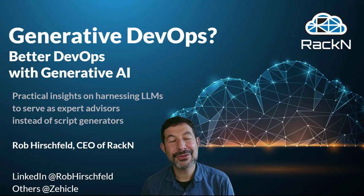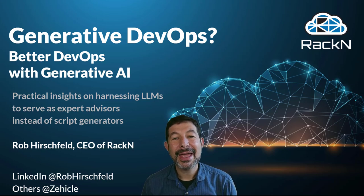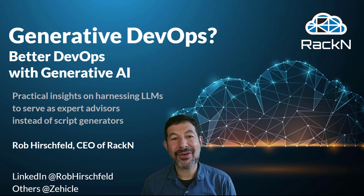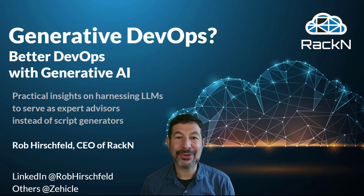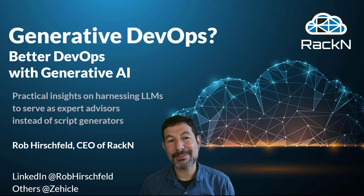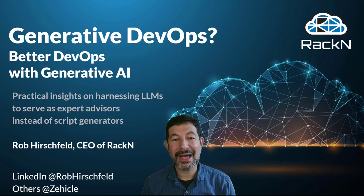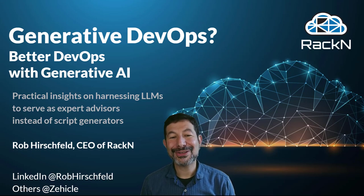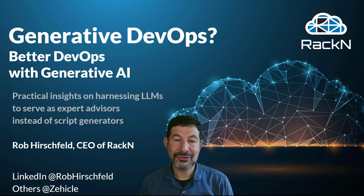Hello, I'm Rob Hirschfeld, CEO and co-founder of RackN, and this is a presentation about how to be a better generative DevOps user. ChatGPT or large language models — what I'll call LLMs throughout this presentation — is a path to create a better DevOps experience, a better operator experience. We're going to explore how to use generative AI to become better at doing our jobs, including practical insights on harnessing these LLMs to serve as expert advisors instead of simply being better script generators.